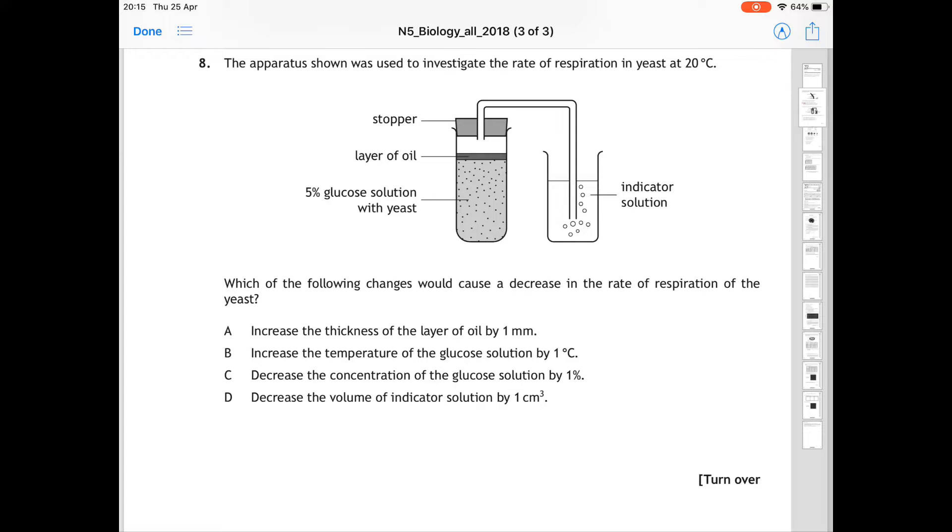For question 8, the apparatus shown was used to investigate the rate of respiration in yeast. So it's trying to confuse you with all the experimental design, but really this is quite a simple question on your knowledge of respiration. It asks you which of the following changes would cause a decrease in the rate of respiration of the yeast. So there's all these different things that you could change, but in order to decrease the rate of respiration, the only one of the answers that makes sense is to decrease the concentration of the glucose. Less glucose means that less respiration is taking place. So 8 is C.